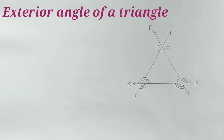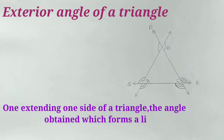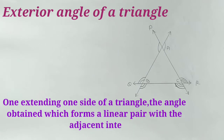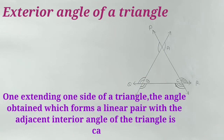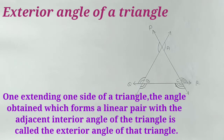That means, on extending one side of a triangle, the angle obtained which forms a linear pair with the adjacent interior angle of the triangle is called the exterior angle of the triangle.